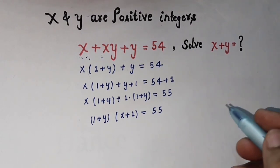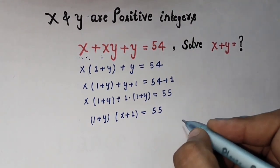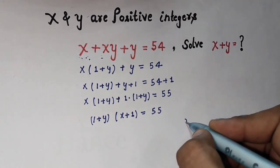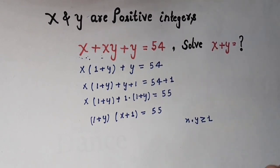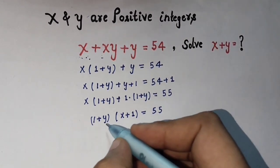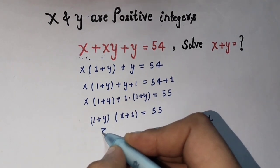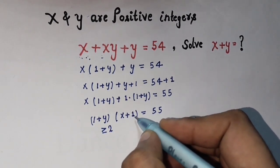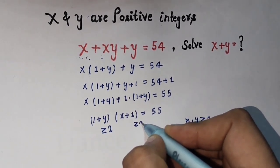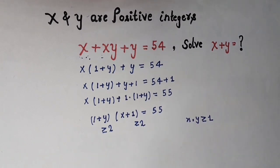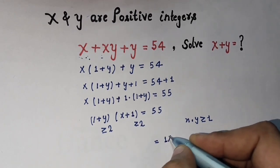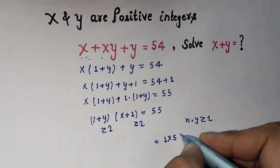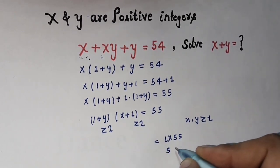We already know x and y are positive integers, meaning x and y are greater than or equal to 1. Therefore (1 plus y) is greater than or equal to 2, and (x plus 1) is also greater than or equal to 2. Our next step is to factor 55. The number 55 has four factor pairs: 1 times 55, 55 times 1, 11 times 5, and 5 times 11.